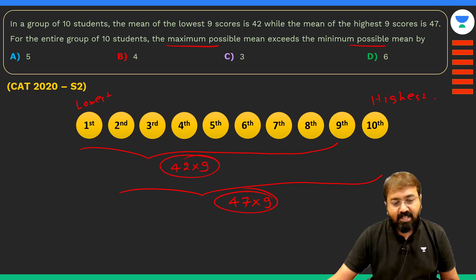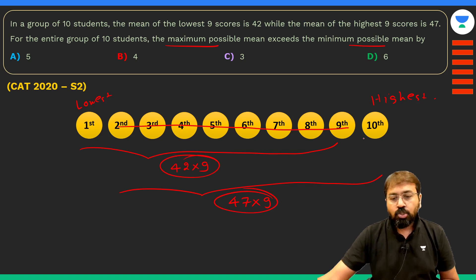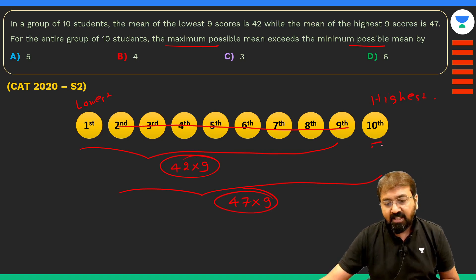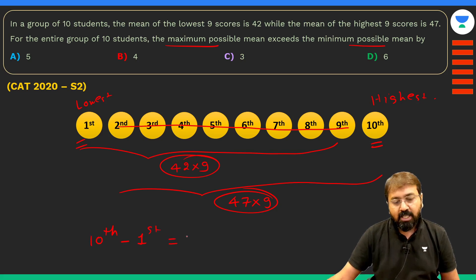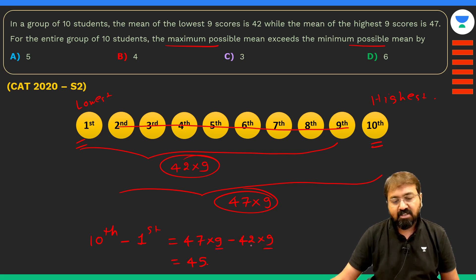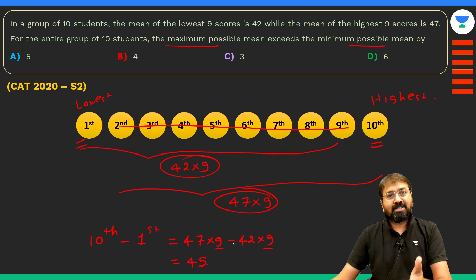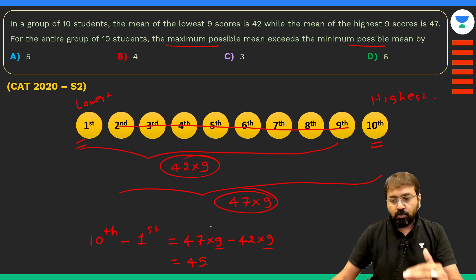If we subtract the two totals, students 2 through 9 cancel out, leaving us with: highest score minus lowest score = 47×9 − 42×9. Since 9 is a common factor, this is 9×(47−42) = 9×5 = 45. So the difference between the highest scorer and the lowest scorer is 45.